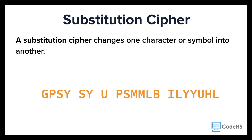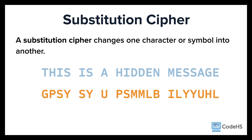One cipher that is commonly used during encryption is a substitution cipher. In this type of cipher, one character or symbol takes the place of another in all instances. Feel free to pause this video and try to determine what this message says.